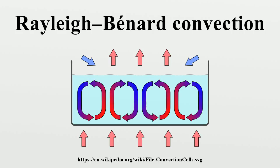Davis and Koch-Meder have suggested that the convection should rightfully be called Pearson-Bénard convection. Rayleigh-Bénard convection is also sometimes known as Bénard-Rayleigh convection, Bénard convection, or Rayleigh convection.